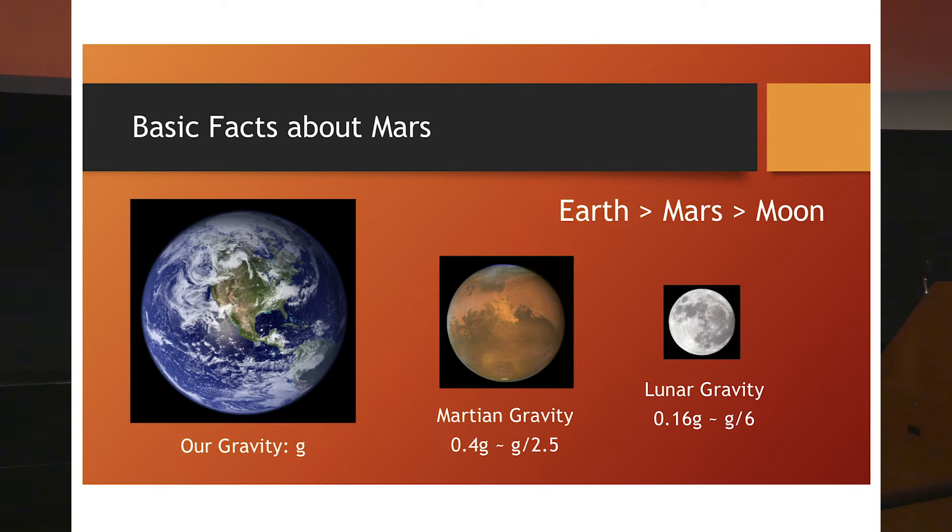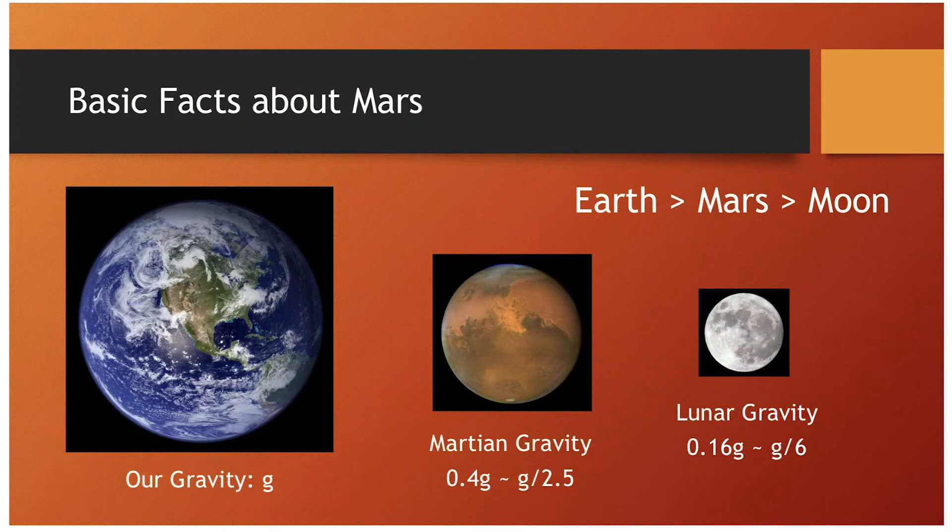Mars is about the geometric mean between these two things. The diameter: you have to double it and then double it again. For gravity, if you take Earth's gravity and divide by two and a half, that's the Martian gravity. And then you divide by two and a half again, that's the lunar gravity.